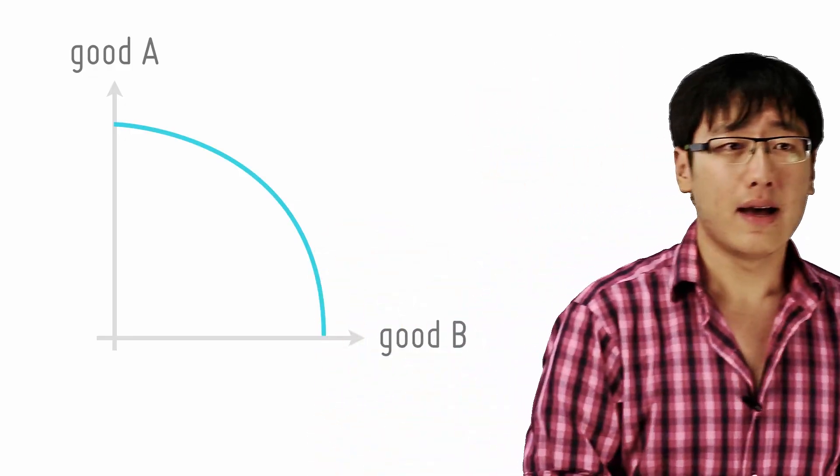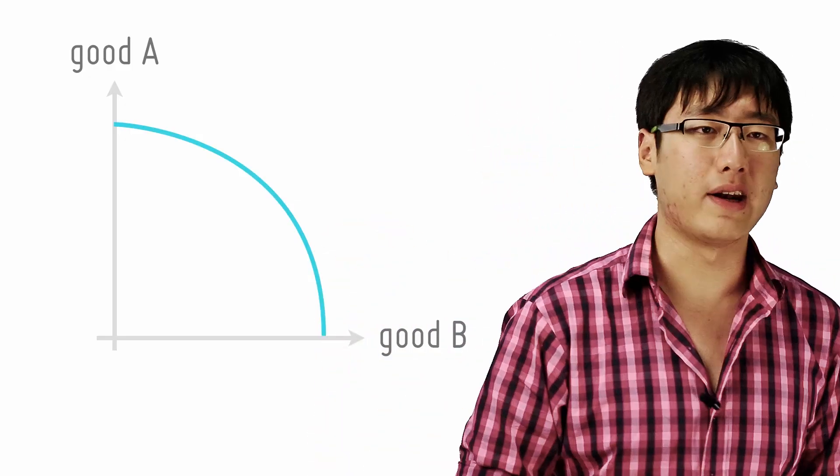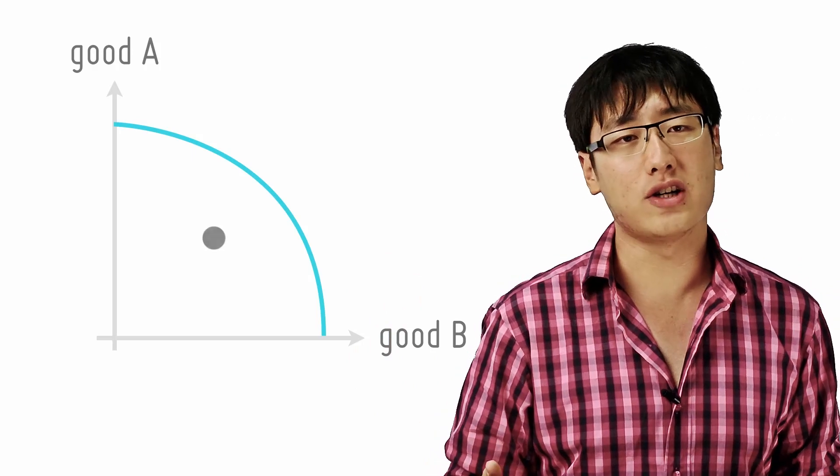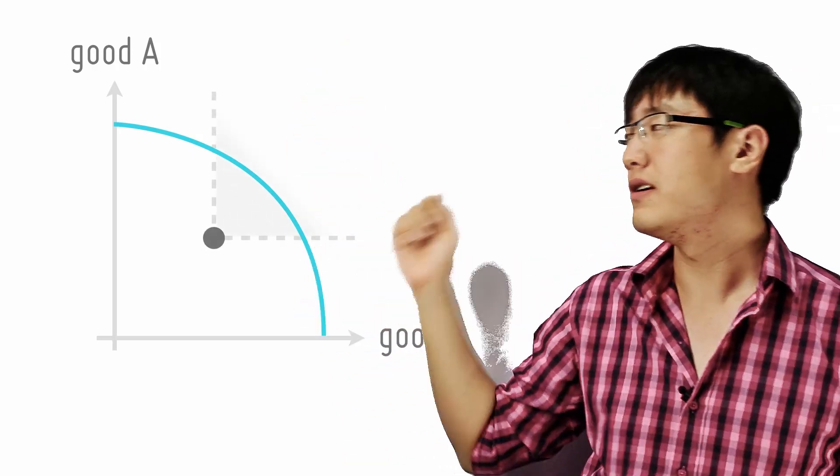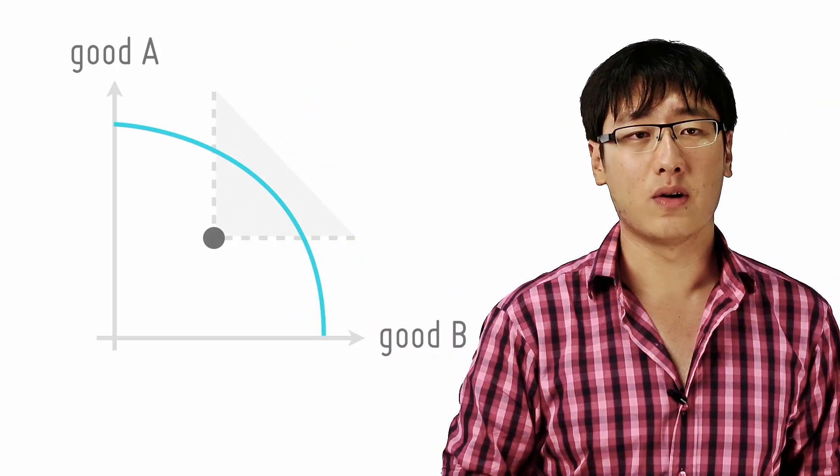Let's bring out the PPC again. Now let's say you are producing at this point in the middle right now. So what is Pareto efficient? It is anything within this quadrant so that you do not make anyone else worse off.